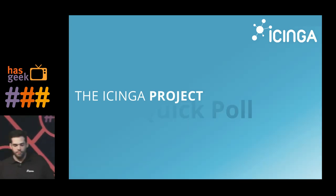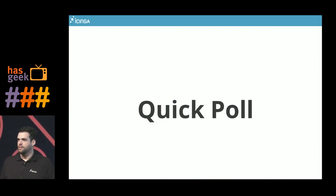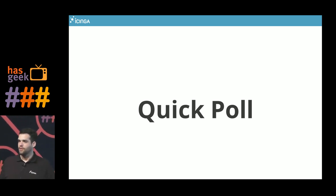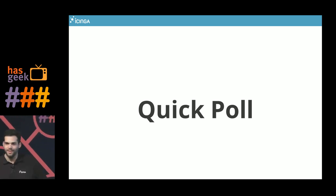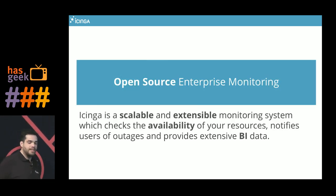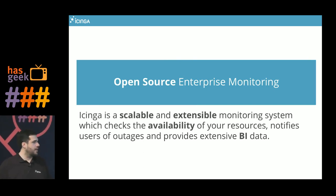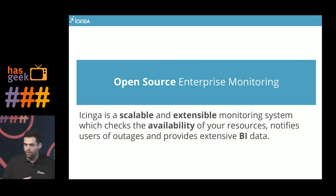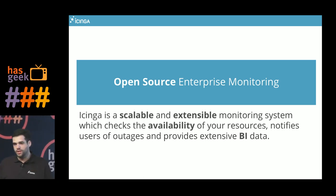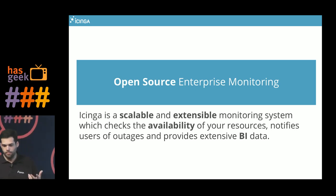So, the Icinga project — before I start, a quick poll. Who knows what Icinga is? About 50%? Who knows what Nagios is? Okay, so we'll try to change this in the next 30 minutes. What Icinga is: Icinga is an open source monitoring tool. Our general approach is a scalable, extensible system — we check availability, we do notifications, and we provide data for reporting. That's our basic approach.